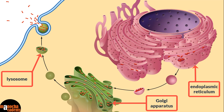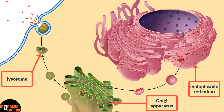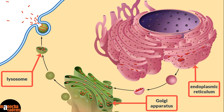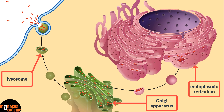The endoplasmic reticulum itself does not form functional proteins — it forms the raw materials which are then modified by the Golgi bodies to produce functional proteins. These get enclosed in a sac in the Golgi body to form vacuoles. If the vacuole contains digestive enzymes like acid hydrolases, we call those vacuoles lysosomes. These three organelles together — the Golgi body, endoplasmic reticulum, and lysosome — are therefore known as the GERL complex.